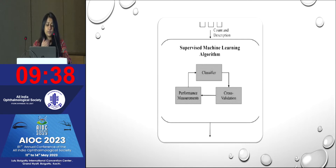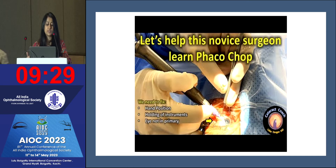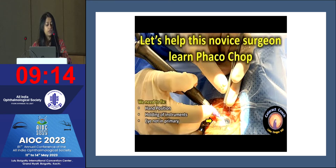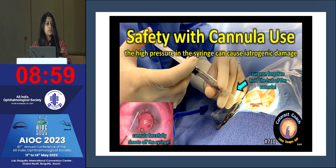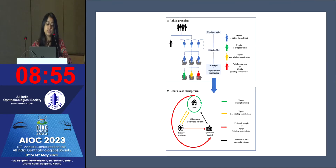With supervised machine learning algorithms, there is a classifier, cross-validation, and performance measurement. These basic programs have been able to identify errors being made. A novice surgeon learning to do phaco or chop can assess whether hand position is correct, the holding of instruments. For example, if the eye is not in primary position, or the surgeon is not holding the hub of the cannula properly — these can be identified and corrected by putting your surgeries through AI assessment.